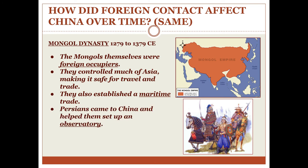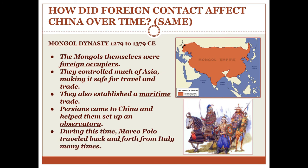Persians — from what we now call Iran — came to China during the Mongol period and helped them set up observatories, bringing the technology needed to create telescopes from the outside. Also during this time, a famous man named Marco Polo traveled back and forth from Italy into China. The Mongol leaders gave him high status in China, and when he returned to Europe to tell stories about China, those stories spread so much that eventually a man named Christopher Columbus wanted to find a faster route to get to China — and we know what happened there.